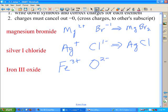Bromide, chloride, oxide. So a plus 3 and a minus 2, we know common denominator, common factor of a 6. Fe₂O₃.